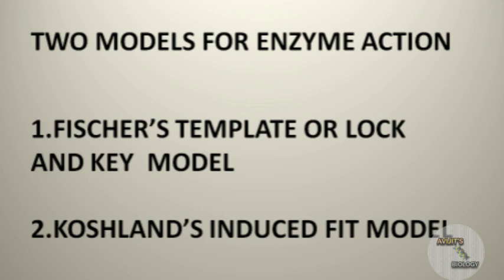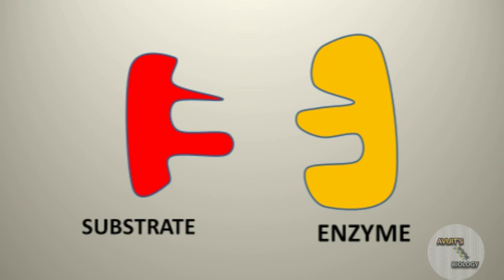The first one is Fisher's template or the lock and key model. And the second one is Koshland's induced fit model. The lock and key model was proposed by Emil Fisher in the year 1894. According to this model, the active site of the enzyme exists in the proper conformation for the catalytic activity even in the absence of the substrate.